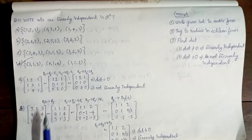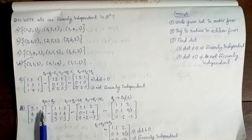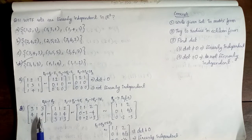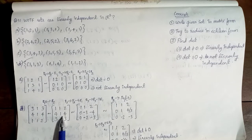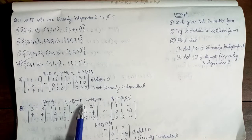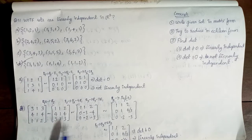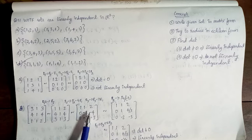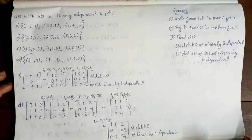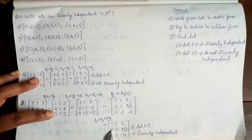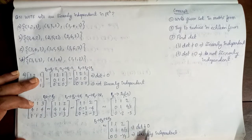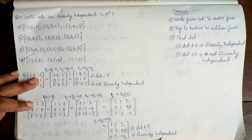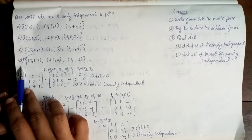Now I will use the last option. I will set up the matrix and perform row operations: swap r1 and r3, then modify r2 and r3. After row reduction, the determinant is 0 — this set is linearly independent. So option D is correct.